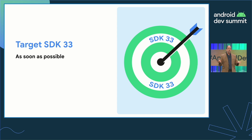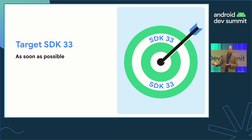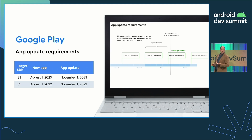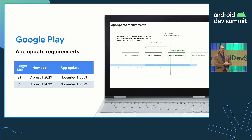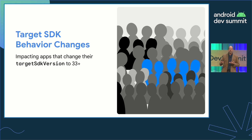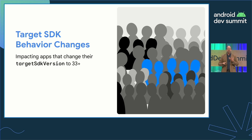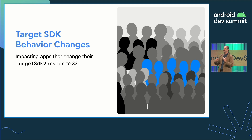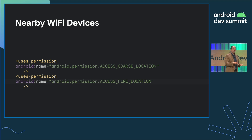That's most of what you need to know about behavior changes for apps not targeting SDK 33. But if notifications are important to your app, you probably want to target SDK 33 as soon as possible so you can request permission in context with justification. You'll also need to do this by November 2023 to continue making app updates on Google Play — so you might as well get started now. When you do target SDK 33, this is typically where we put more substantial changes, since targeting the SDK version implies your app has been tested against that version. Let's start with privacy and security related changes.